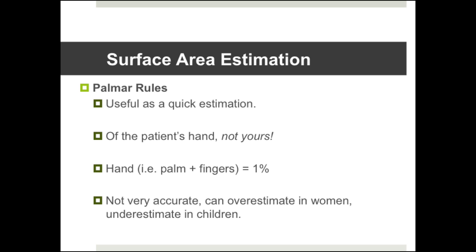There are several techniques for surface area estimation. Here we provide a brief overview of the three most commonly used: the Palmar rule, Rule of Nines, and the Lund-Browder chart. The Palmar rule is not the most accurate method, but it is very useful as a quick estimation where a Lund-Browder chart is not available. You must use the patient's hand — not your own — as you can very easily over or underestimate a burn. The palm and fingers together equal one percent. It can overestimate or underestimate depending on gender and age.